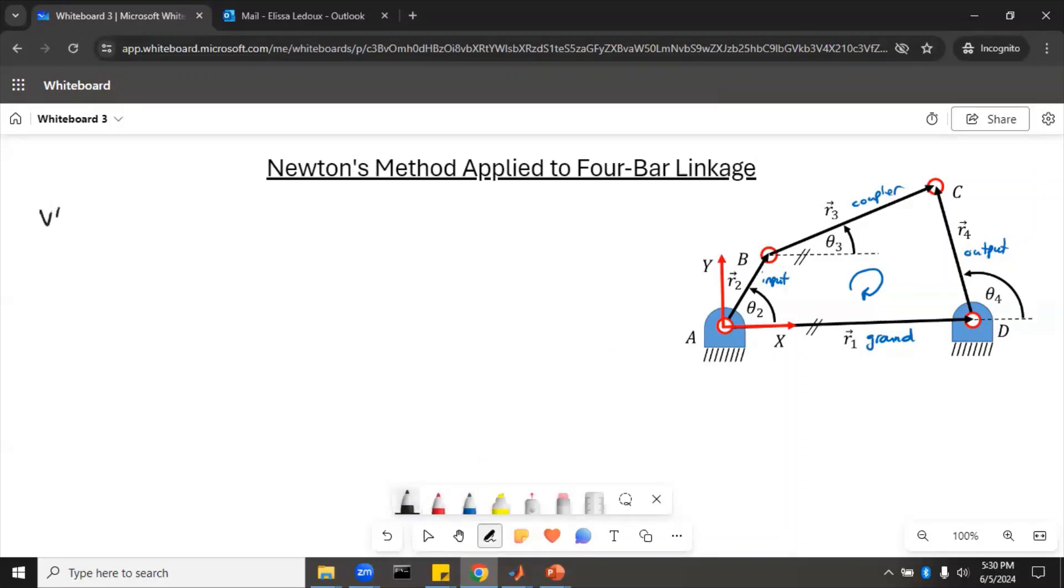So we'll write our vector loop equation, and that is R2 plus R3 minus R4 minus R1 equals zero. I'm not going to go into a whole lot of details here because this has been covered previously, but then we need to split it up into the position scalars. We'll get the X equation and the Y equation. So because this is a loop, obviously these are supposed to equal zero, and we pretty much just break this all down into sine and cosine, recognize that R1 only points in the X direction, and we can write R2 cos theta 2 plus R3 cos theta 3 minus R4 cos theta 4 minus R1 equals zero, and then R2 sine theta 2 plus R3 sine theta 3 minus R4 sine theta 4, and then R1 is not in the Y direction, so we just have zero.